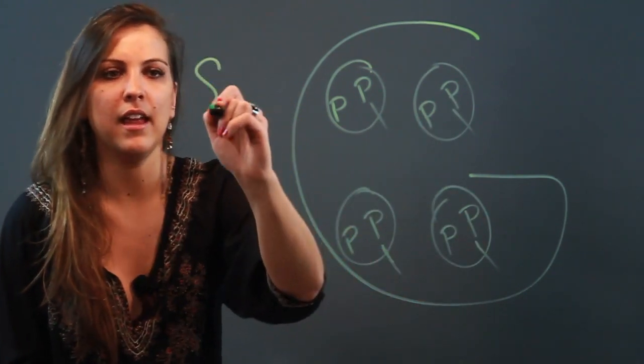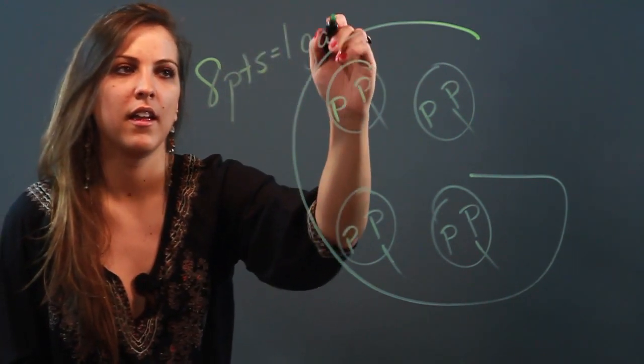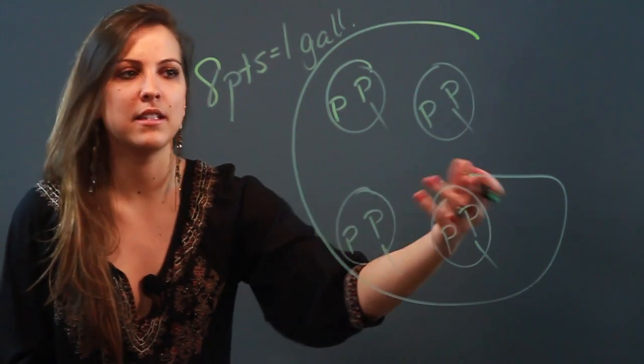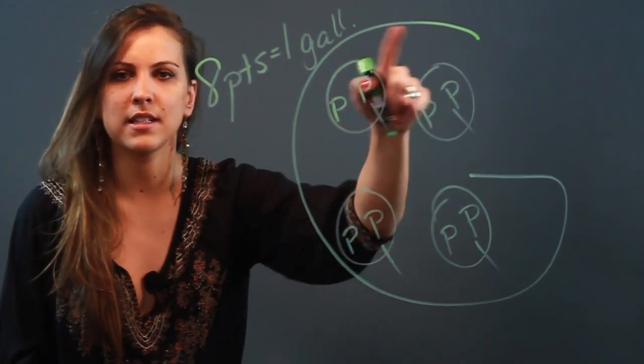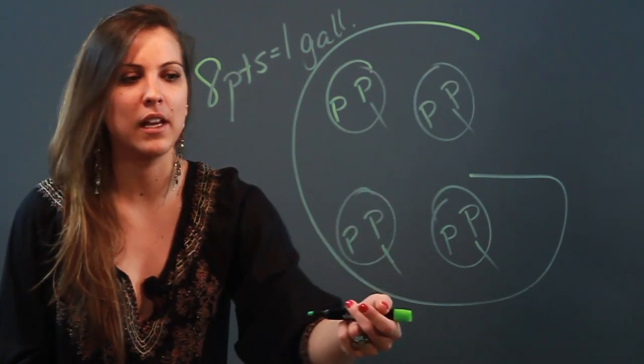That means there are eight pints in every one gallon. And you can use this big G to find different conversions between quarts and gallons also, right? There's four Q's in one gallon, so there's four quarts in one gallon.